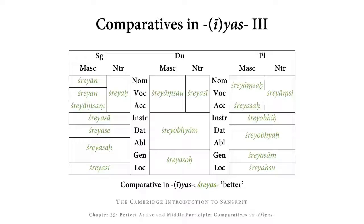Here is the paradigm of SHRAYAS, meaning 'better,' in the masculine and neuter. The shaded fields are the strong cases. In the masculine singular, we have SHRAYAN, SHRAYAN, SHRAYANSAM. The nominative and vocative masculine singular need to be memorized: SHRAYAN and SHRAYAN. In the accusative, we have the strong stem SHRAYANS plus the ending AM. In the dual SHRAYAN-SAO, strong stem plus ending AU. In the masculine nominative vocative plural, SHRAYAN-SAH, the strong stem with YANS plus ending AH.